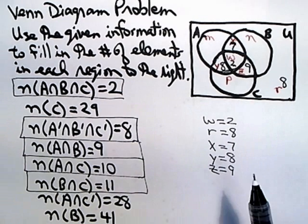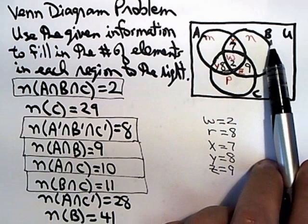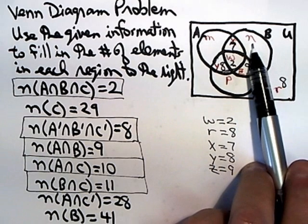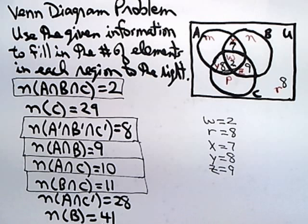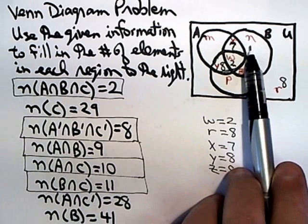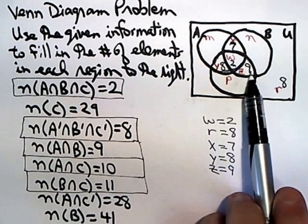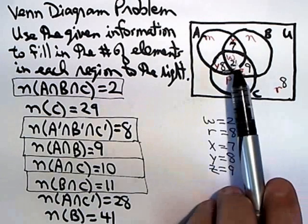You kind of just look back and forth. I do notice that I know everything in set B except N, and I know that there are supposed to be 41 elements in set B. So I might, at this point, use this and say, well, whatever N is, when I add it up to 7 and 2 and 9, I've got to get 41.